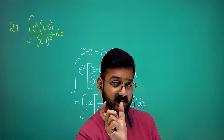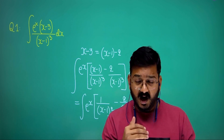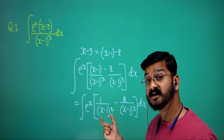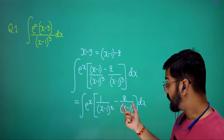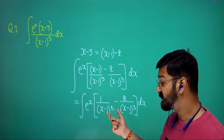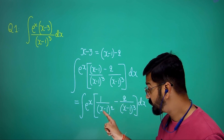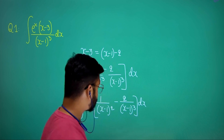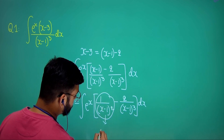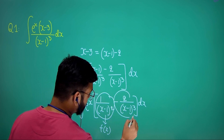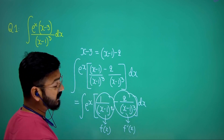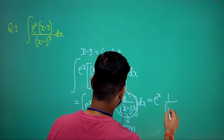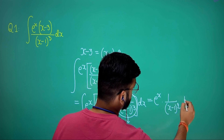Remember: when the variable term is in the denominator, differentiation increases its degree. Here we have degree 2 and degree 3. Since it's in the denominator and differentiation increases the degree, 1/(x minus 1) squared is f(x) and 2/(x minus 1) cubed is f'(x). Using the standard integral directly, the answer is e to the power x divided by (x minus 1) squared plus C.